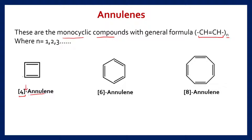For example, this compound we will write as [4]-annulene, for this compound we will write as [6]-annulene, and for the third compound we will write its name as [8]-annulene.